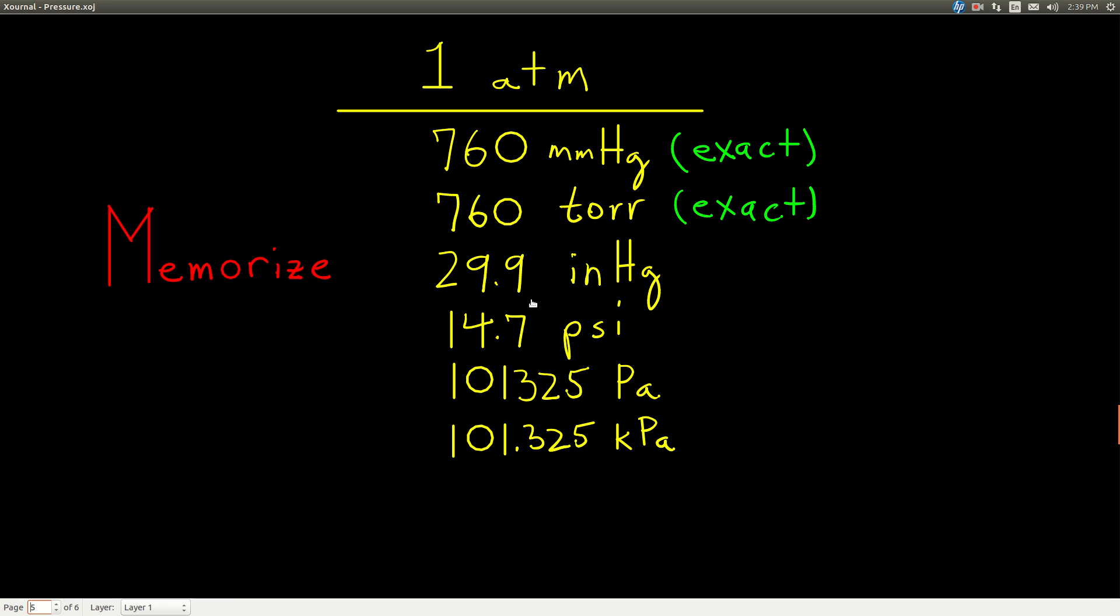One atmosphere equals 29.9 inches of mercury. This one's not exact, only three sig figs. One atmosphere is 14.7 PSI, 101,325 pascals, or 101.325 kilopascals. Remember, the first two are exact. Memorize these conversion factors. One atmosphere is equal to each of these, and each of these are equal to each other. For instance, 29.9 inches of mercury equals 14.7 PSI.